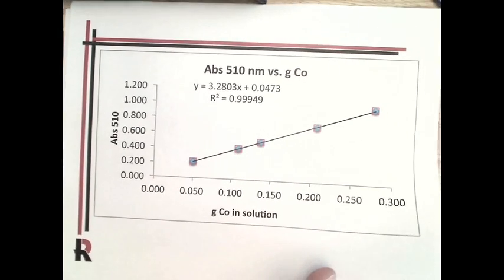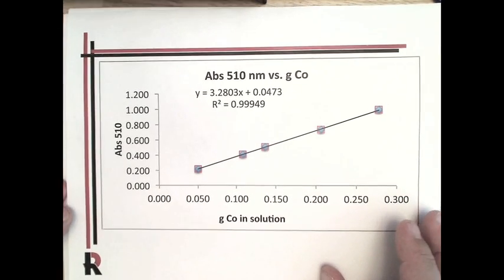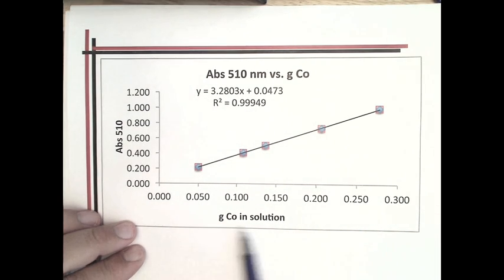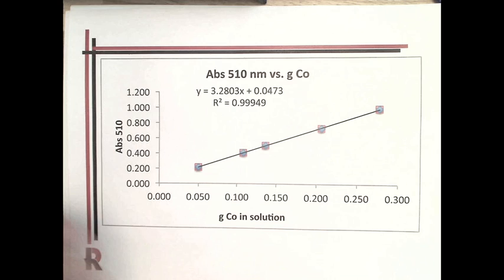This is example data. What this has on the x-axis is the grams of cobalt in solution, in the 25 mL solution, versus absorbance.